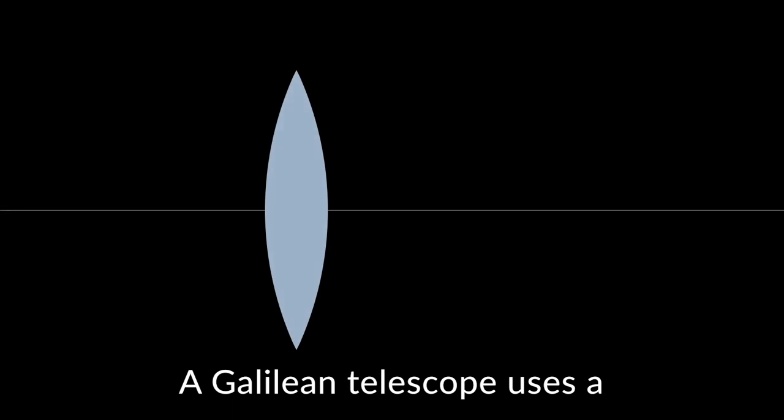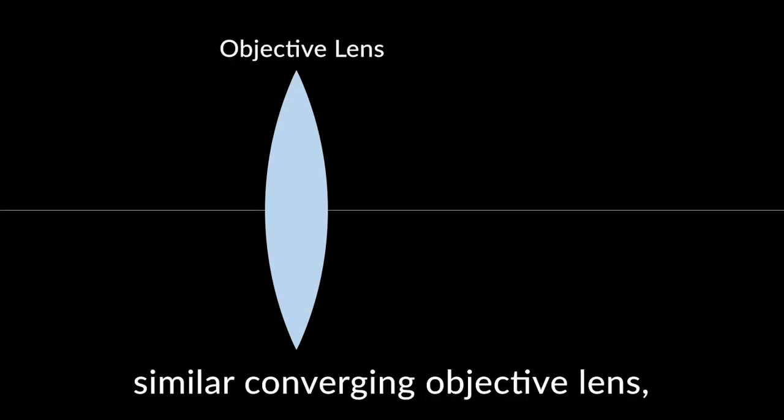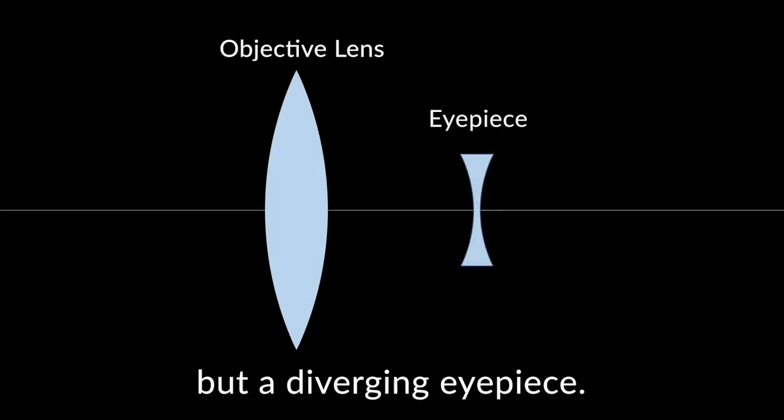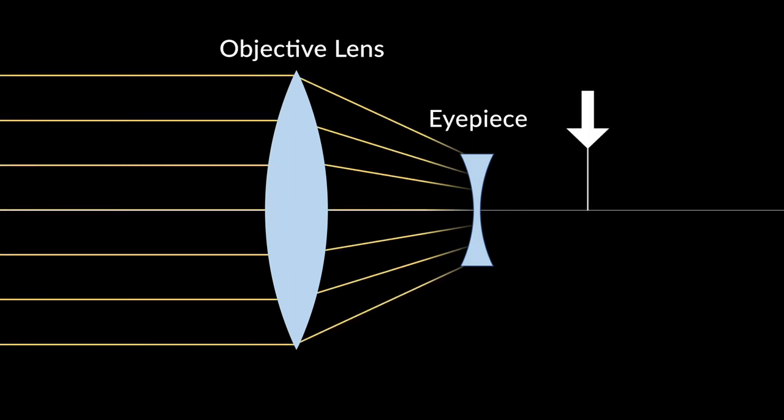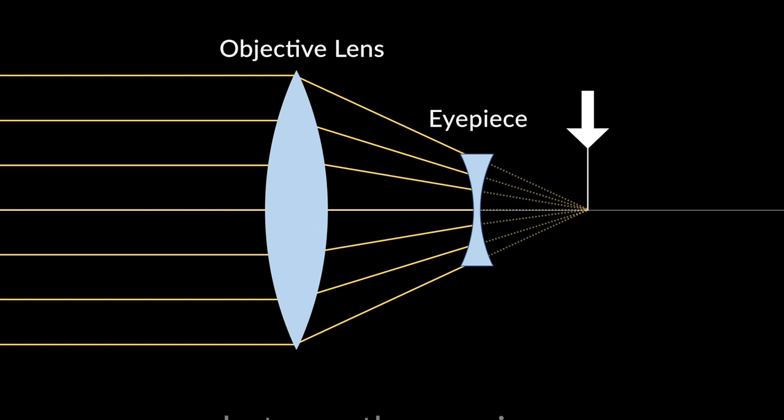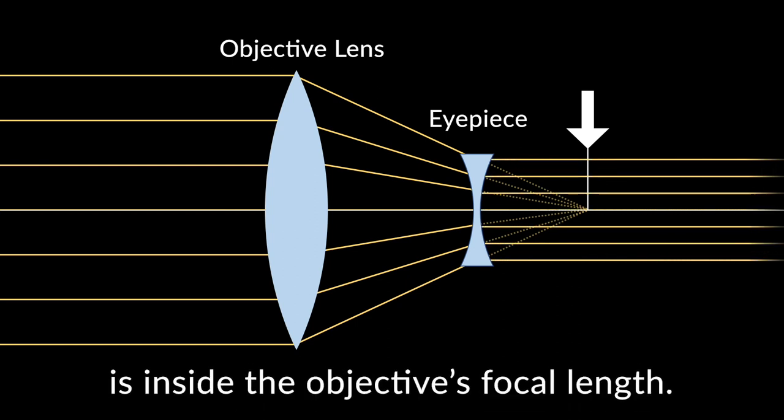A Galilean telescope uses a similar converging objective lens, but a diverging eyepiece. Again, these two lenses share a focus, but now the eyepiece is inside the objective's focal length.